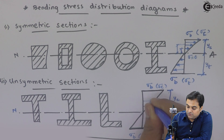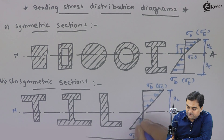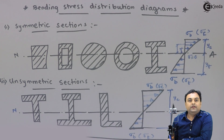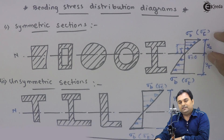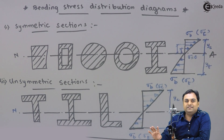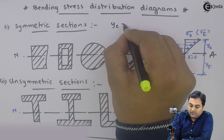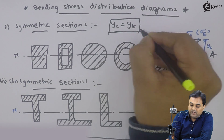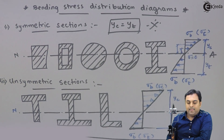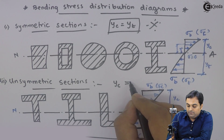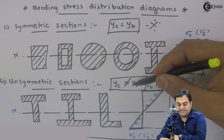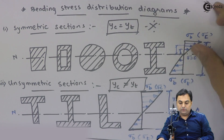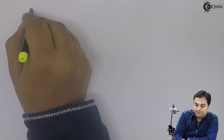जैसे-जैसे मैं layers के उपर जाऊंगा, वहाँ पर bending stress का value बढ़ के मिलेगा. The major difference for unsymmetric sections: for symmetric section both YC and YT values will be same — the depth in compression will be equal to the depth in tension. But for unsymmetric section, YC will not be equal to YT. इसी से आपको समझ में आ जाएगा कि वो unsymmetric section है. Now let me explain section modulus.